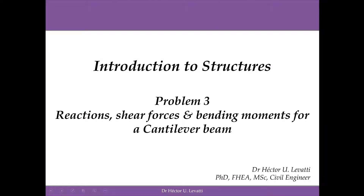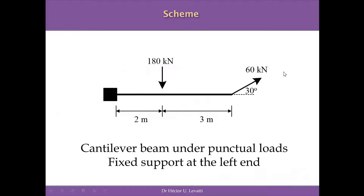Welcome to Introduction to Structures. This is problem three: reactions, shear forces, and bending moment for a cantilever beam. We previously analyzed a cantilever beam subjected only to vertical forces. In this case, we're going to resolve a cantilever beam under a vertical load of 180 kilonewtons and an inclined load at the right end of the beam, inclined 30 degrees from the horizontal direction.